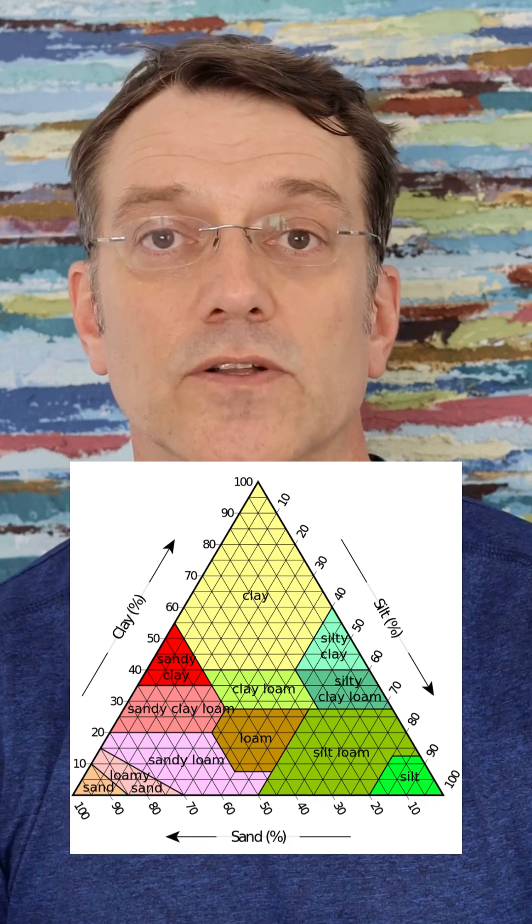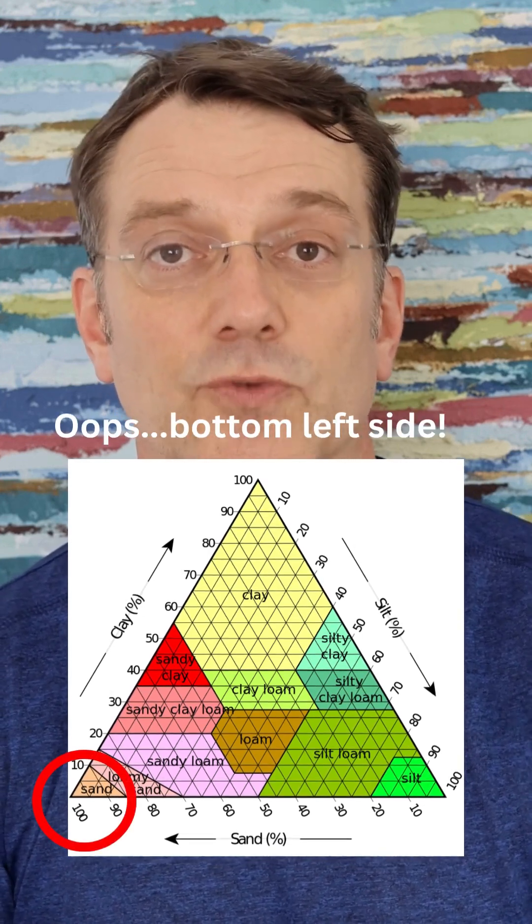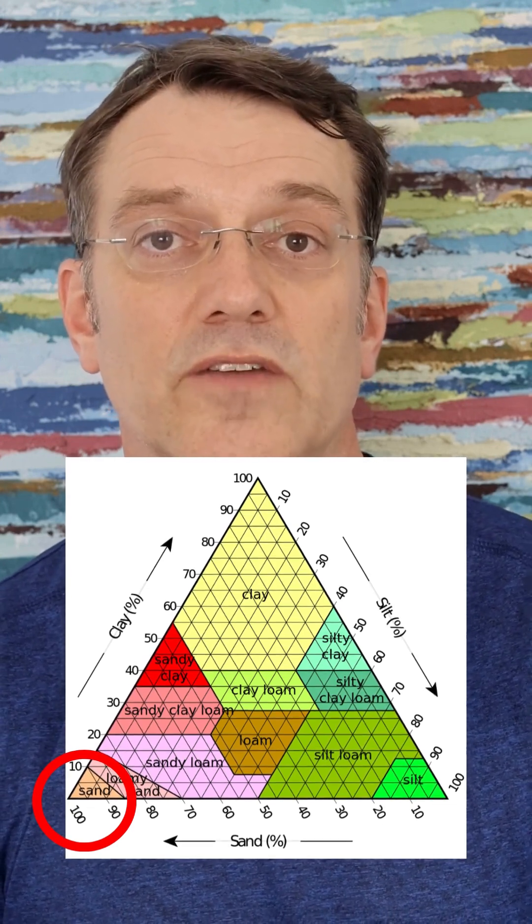You notice the top of the triangle is predominantly sand. If a soil is very sandy, it drains quickly and dries out quickly. That limits productivity in that soil.